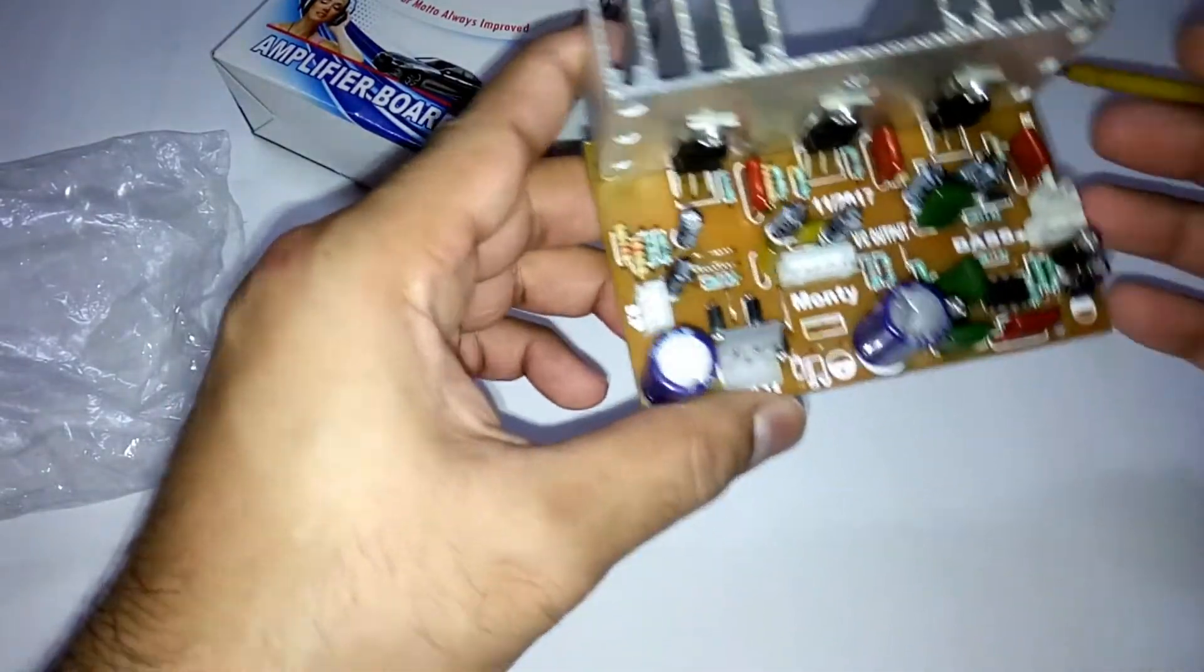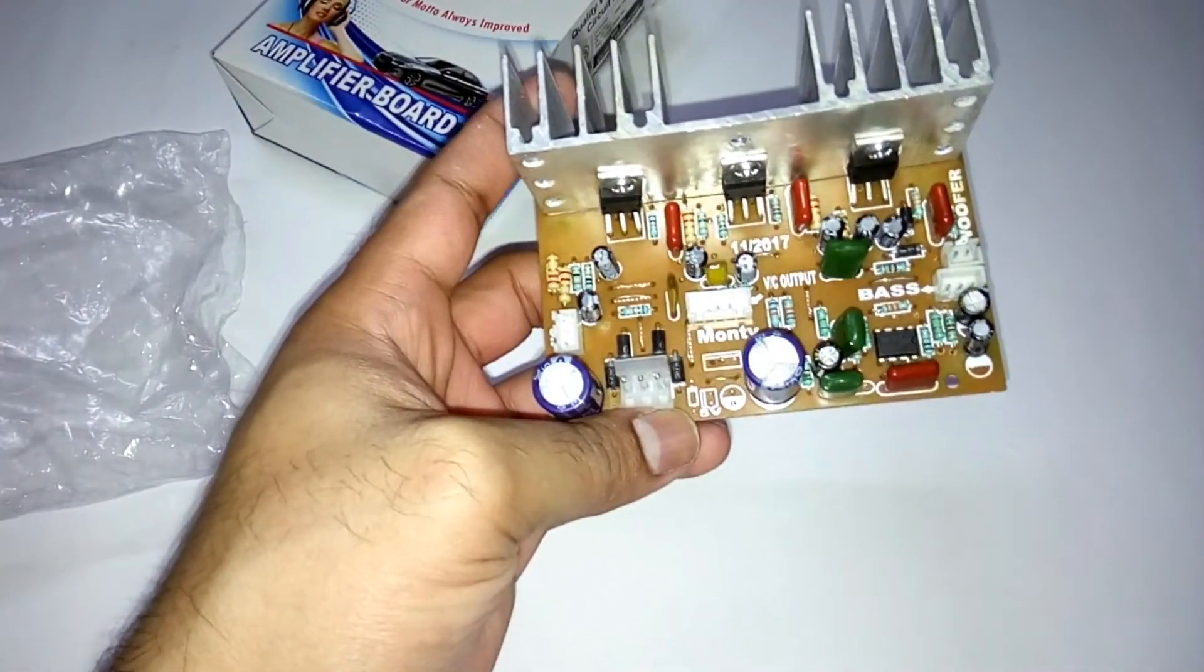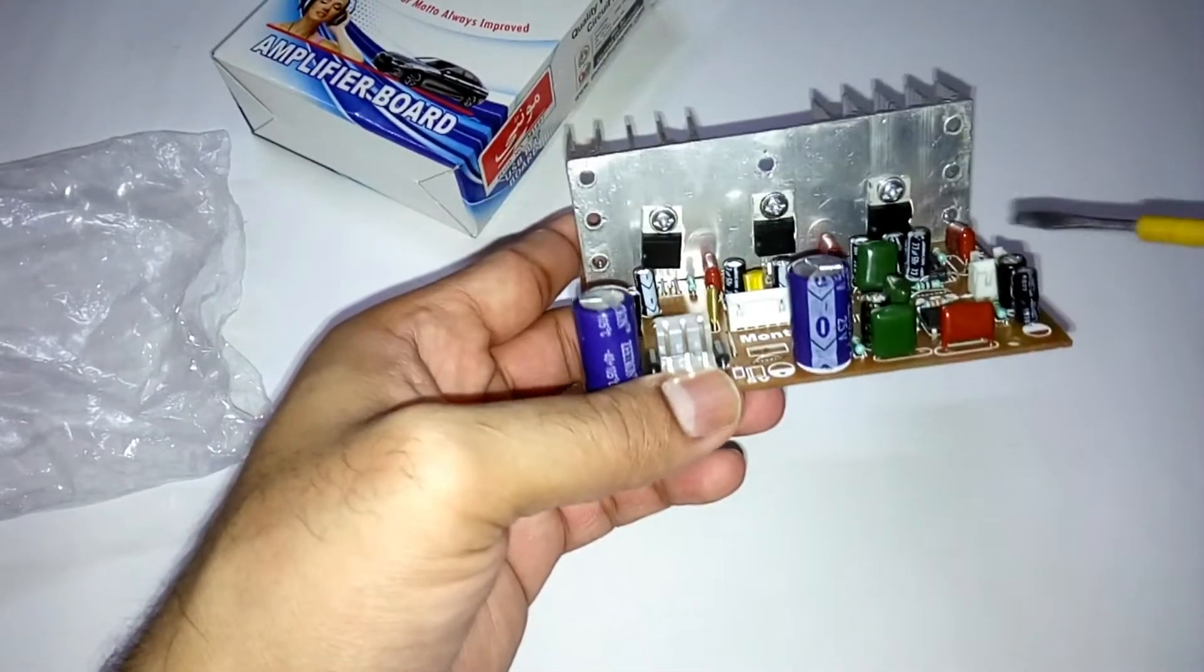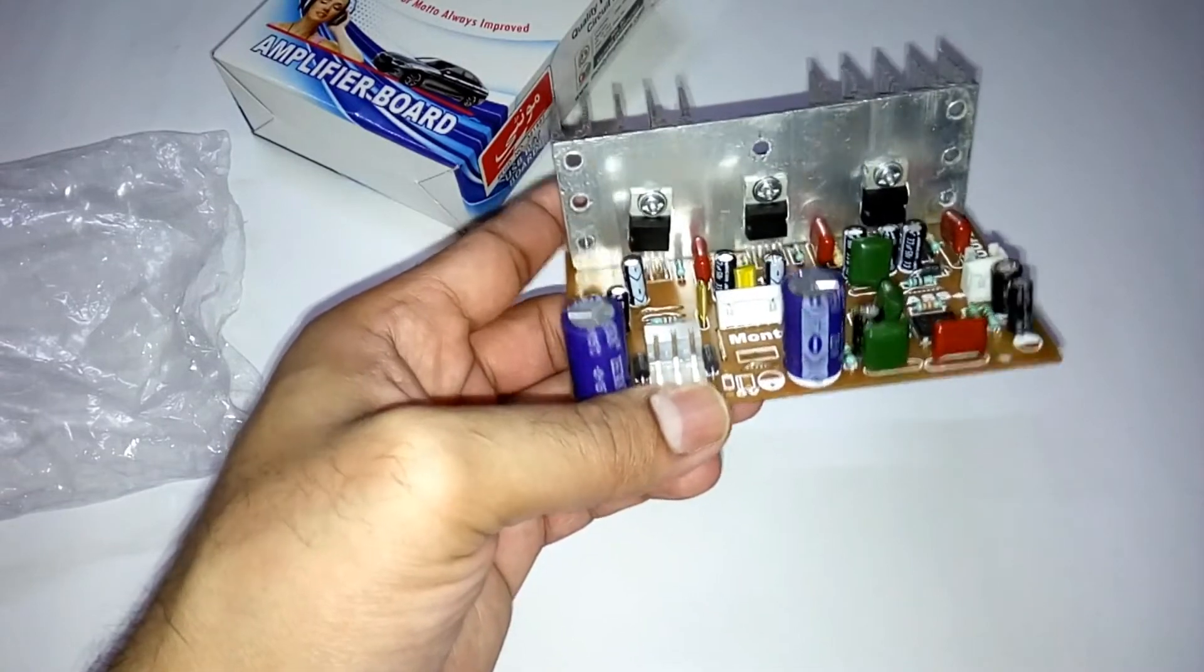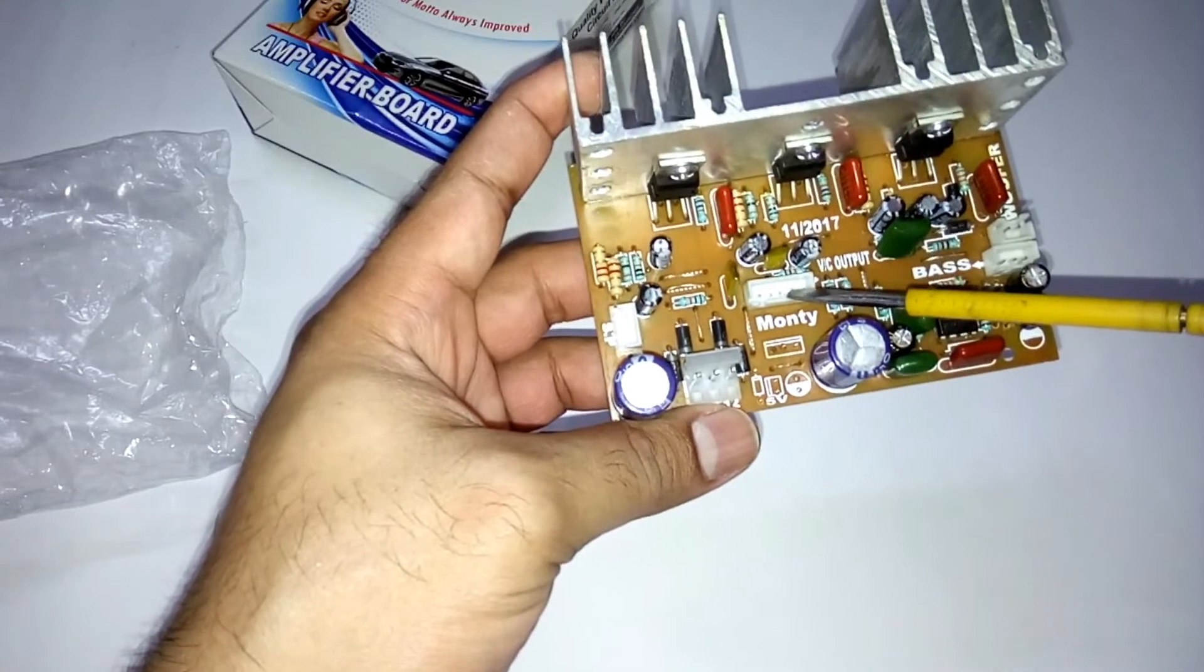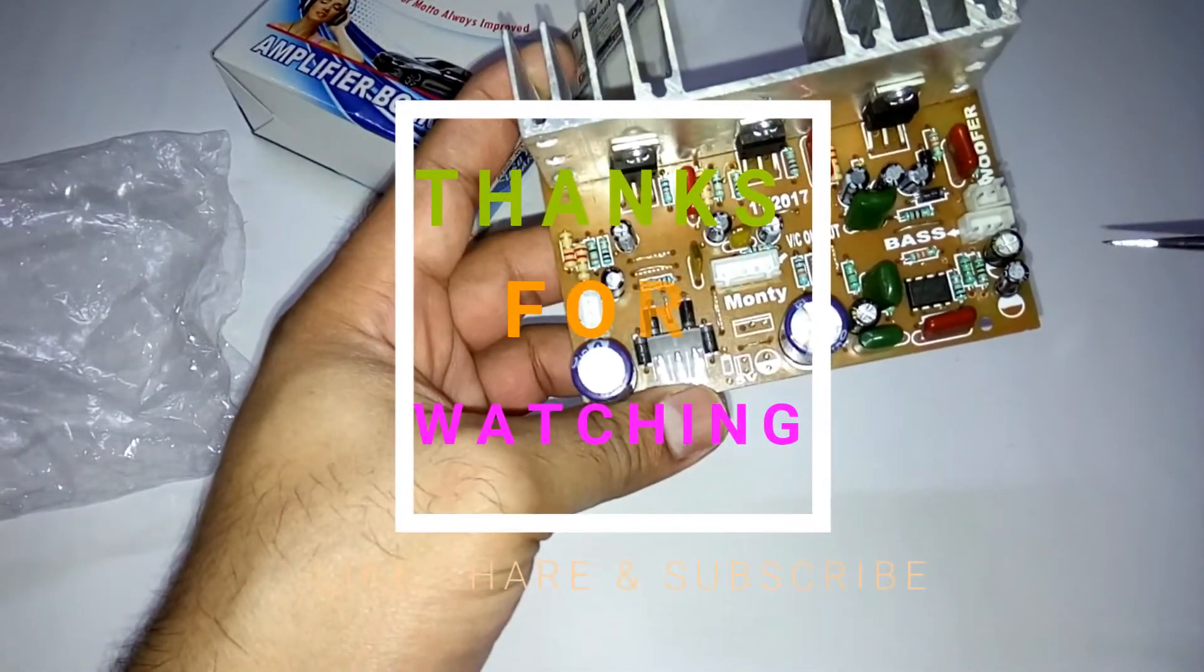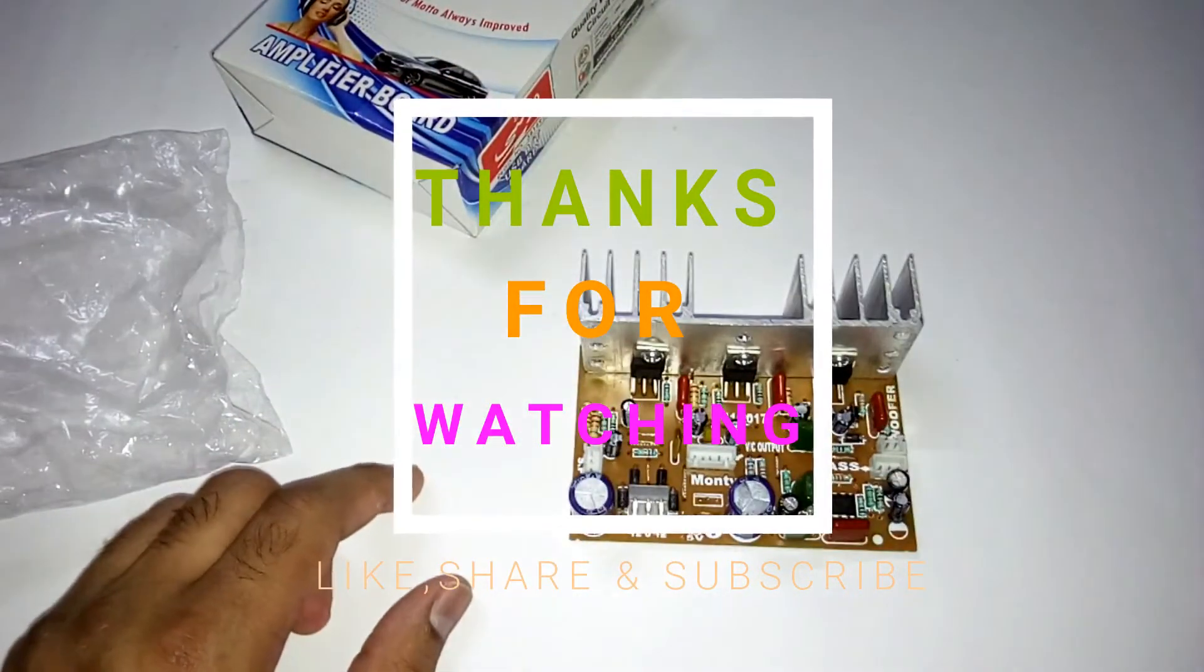So that's it guys, this is a simple kit you can use for making a 2.1 amplifier. I want to tell you that TDA2030 ICs produce pretty good quality sound. In my next video I'm gonna find out which two pins are for the input. So till then, that's it guys. Thanks for watching, bye bye.